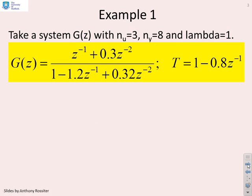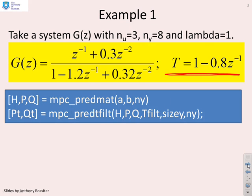There's the system G and you'll notice in particular we've given a simple T-filter. When we did simple GPC we had the code MPC_PREDMAT to find the prediction matrices. If you want to do a T-filter, we've provided a piece of code MPC_PRED_T-filter, and you'll notice it takes as its inputs HP and Q from the previous file, but it also requires the T-filter.